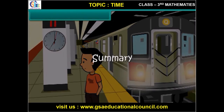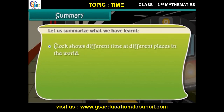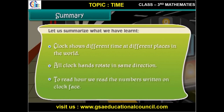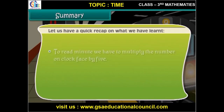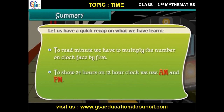Summary — let us summarize what we have learned. Clocks show different times at different places in the world. All clock hands rotate in the same direction. To read the hour, we read the numbers written on the clock face. To read minutes, we multiply the number on the clock face by 5. To show 24 hours on a 12-hour clock, we use AM and PM.